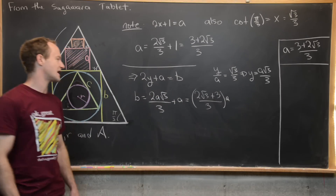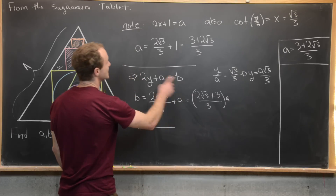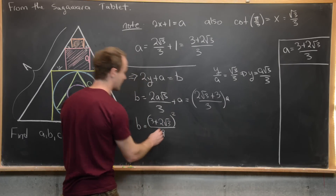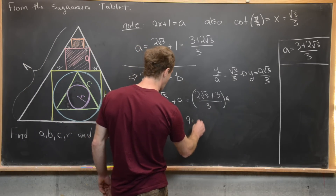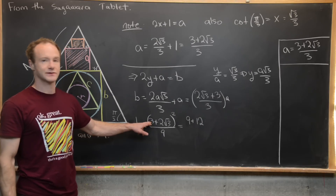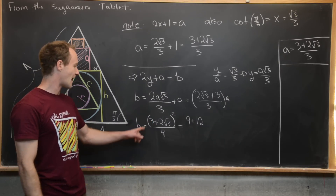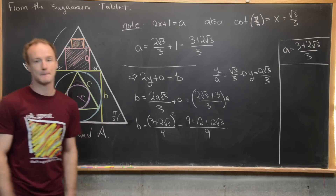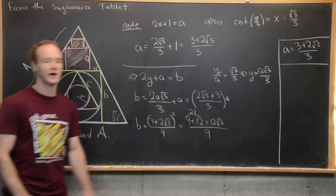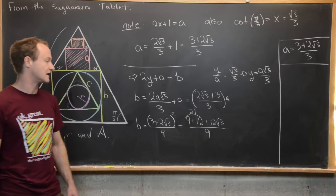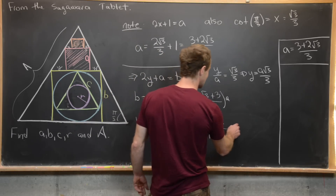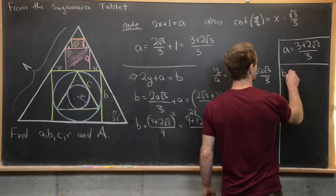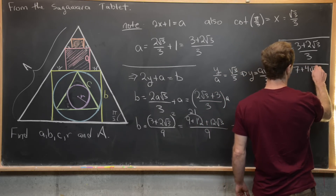So b equals 2a times root 3 over 3 plus a, which is (2√3 + 3) / 3 times a. Substituting our value for a, b equals (3 + 2√3)² / 9. Expanding the numerator: 9 + 12 root 3 + 12 root 3 + 12 = 21 + 24 root 3 — wait, foiling gives 9 + 12 root 3 + 12 root 3 + 12, so 21 + 24 root 3 over 9. Factoring 3 out of numerator and denominator gives b equals (7 + 4√3) / 3.